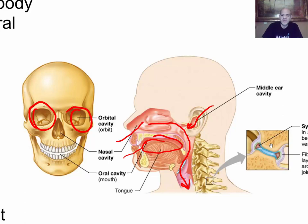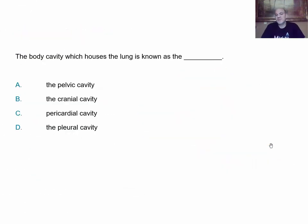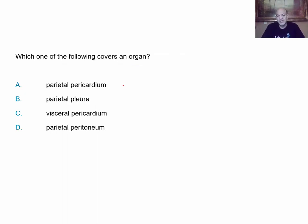Practice questions: First, the body cavity that houses the lungs is known as — A: pelvic cavity, B: cranial cavity, C: pericardial cavity, or D: pleural cavity? Second, which of the following covers an organ — A: parietal pericardium, B: parietal pleura, C: visceral pericardium, or D: parietal peritoneum? That is the end of this chapter.